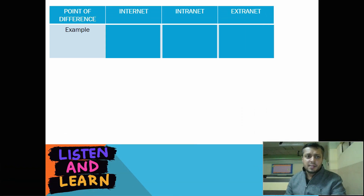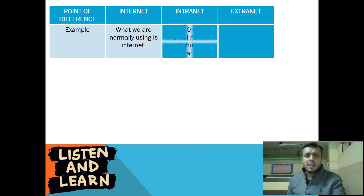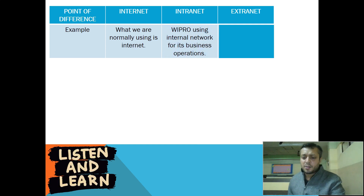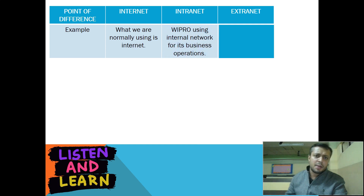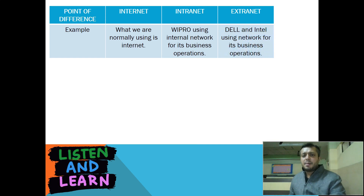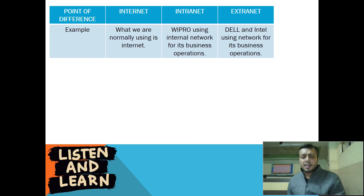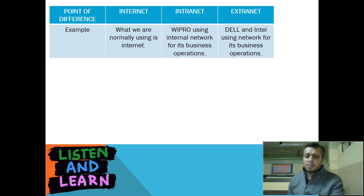To wrap up the difference between the three with examples: a general example of internet is what we normally use — like watching videos on YouTube. An example of intranet would be Wipro, a large organization that uses an internal network for its business operations. Whereas when we talk about Dell or Intel, these companies use their extranet to run business operations, contact suppliers, vendors, and customers. That is an example of extranet.